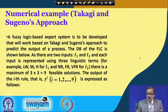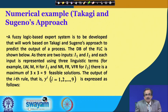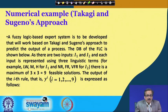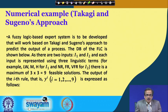In Takagi and Sugeno's approach, the way we express the output as a function of the input parameters means that if you just read one rule, no clear control action comes to mind — so interpretability is much less. However, we can achieve better accuracy because we use an optimizer with known data, giving very accurate coefficient values and ultimately very accurate output predictions.